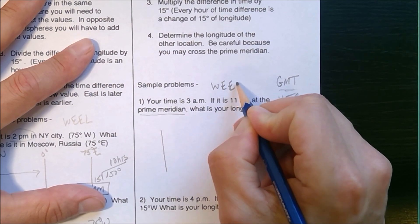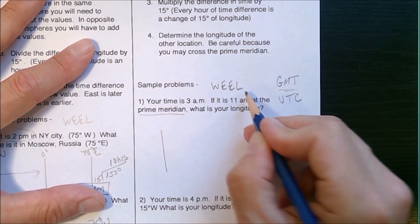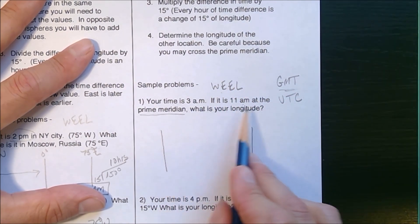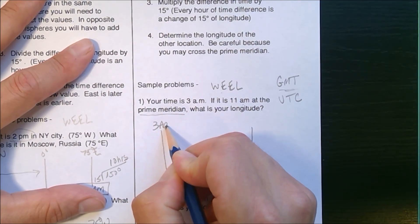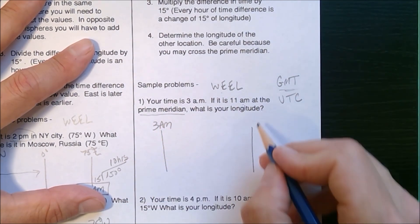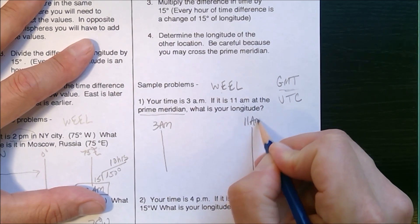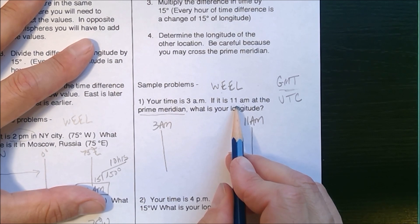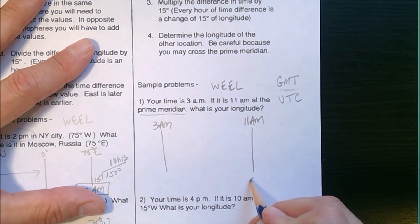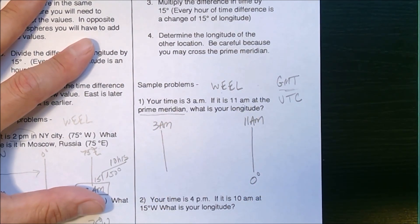Since they're at different longitudes, they're at different times. Your time is 3 a.m., it's 11 a.m. I'm going to go back to WEEL: west earlier, east later. 3 a.m. is much earlier, so 3 a.m. goes west. 11 a.m. is to the east. Looking at this, 11 a.m. is the prime meridian, so I'm going to label that zero degrees.